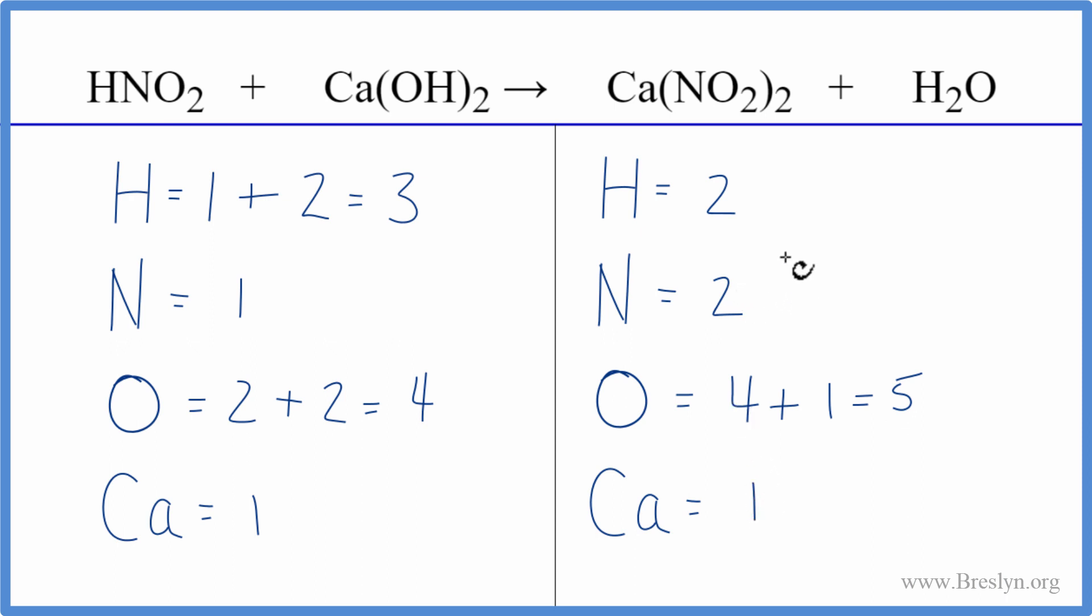So when I look at this, I think I'll wait and do the hydrogens and the oxygens last. That's a good strategy often with these equations. And let's fix the nitrogens. We have two here and one here. If we put a coefficient of two in front of the HNO2, that should fix the nitrogens.